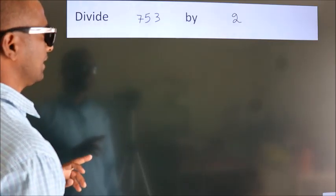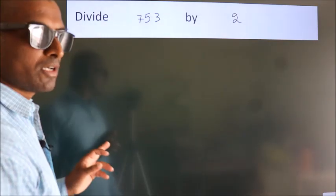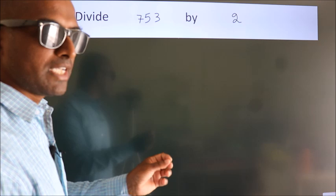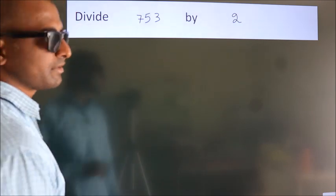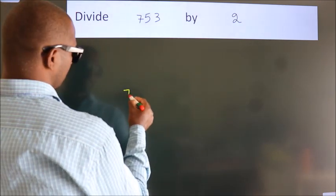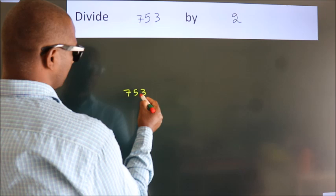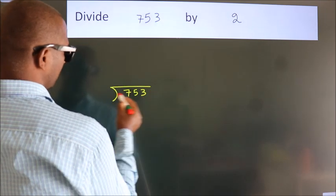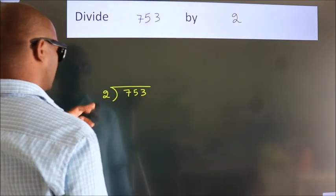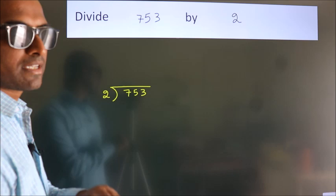Divide 753 by 2. To do this division, we should frame it in this way. 753 here, 2 here. This is step 1.